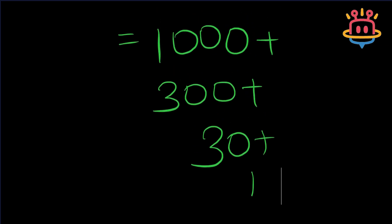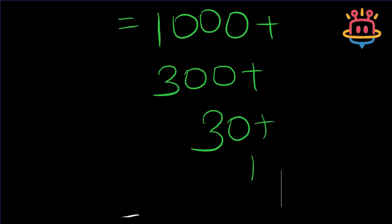That is 1000 plus 300 plus 30 plus 1 would be 1331.